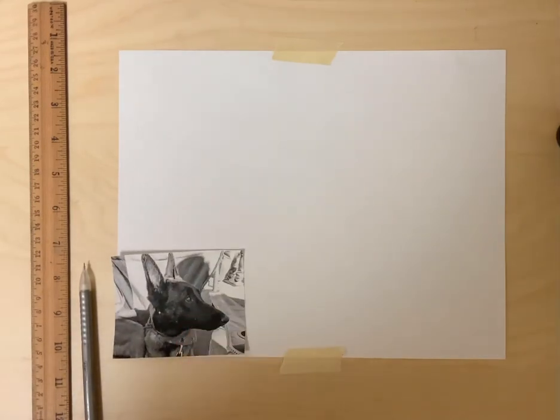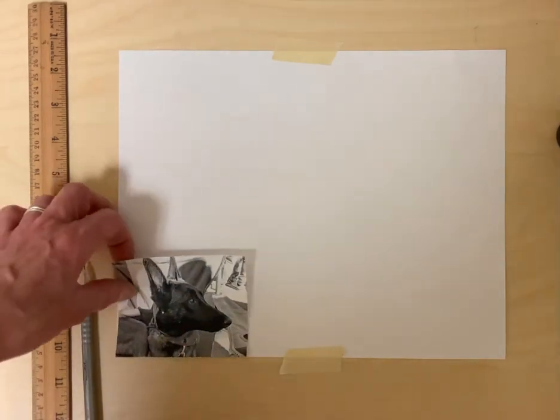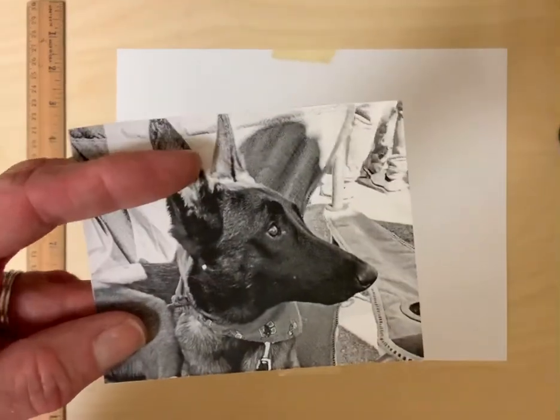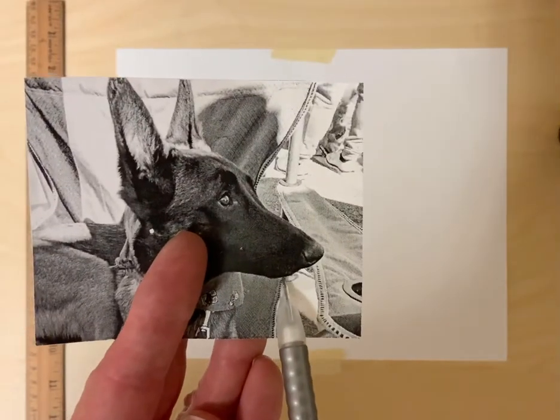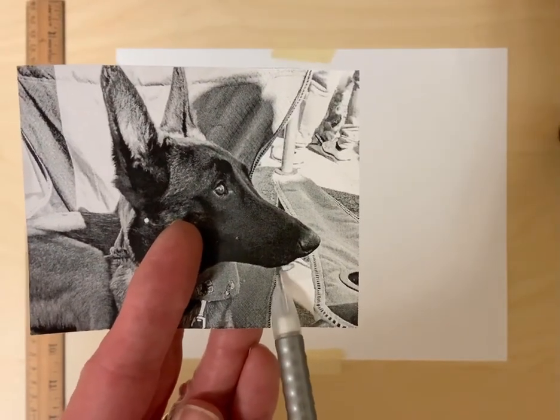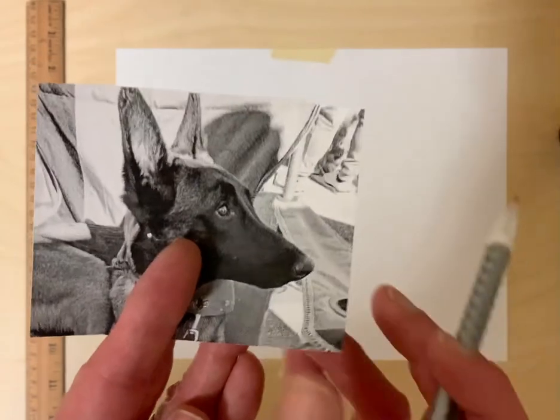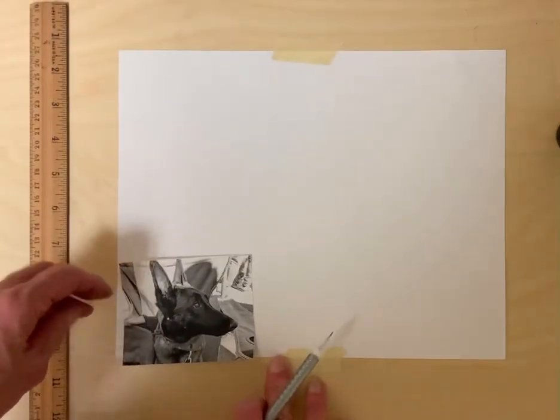Alright I have my photo. Once again I'm going to line it up in the corner. I'm also going to try and find a point that I know I can find again. In this case I'm using this point right here where the dog's muzzle is right up to the chair because I think that'll be easy for me to find a second time.